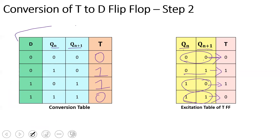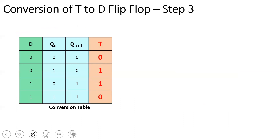This completes the conversion table. Step 2 is over. Step 3 is to derive the expression form from the conversion table using a Kmap to find the expression for T.